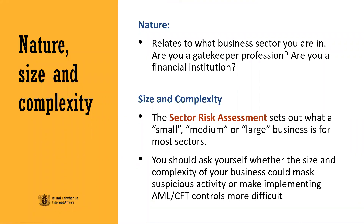Nature, size and complexity. Nature relates to what business sector you're in and what services you provide. Are you a gatekeeper profession? Are you a financial institution? Is there anything about the nature of your business that may make you more vulnerable? The sector risk assessment sets out what a small, medium or large business is for most sectors. For example, for the legal sector: small means 1 to 19 employees, medium means 20 to 99 employees, and large means 100 or more employees. You should ask yourself whether the size of your business could potentially mask suspicious activity, as the size of your business may play a role in how attractive it is for money laundering or terrorism financing. A large business is less likely to know its customers personally, which could offer more anonymity, just like a complex business structure with multiple offices and subsidiaries. Size and complexity could also impact your implementation of AML-CFT measures, which could create more risk. Considering these factors is the analysis you should include in your risk assessment.